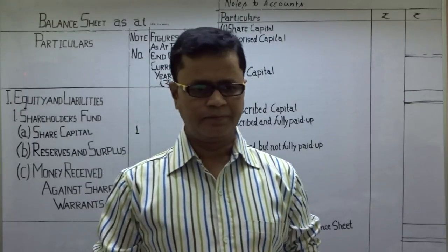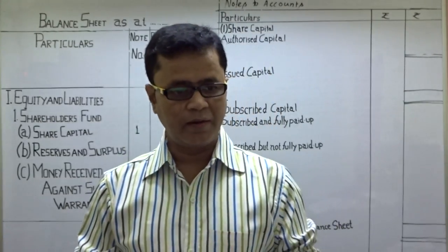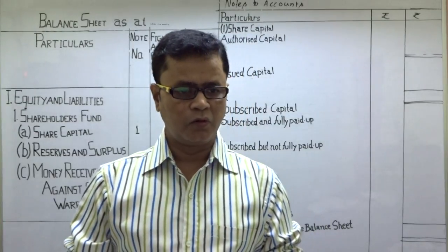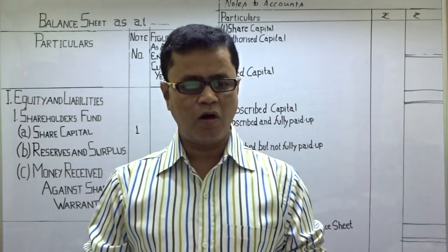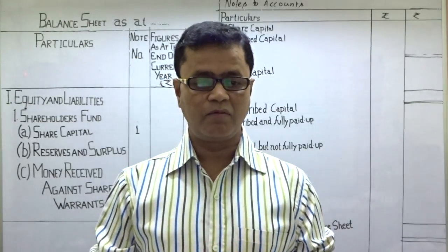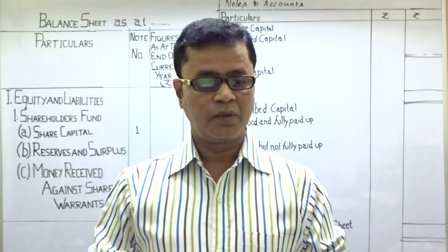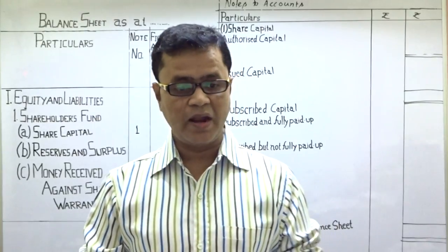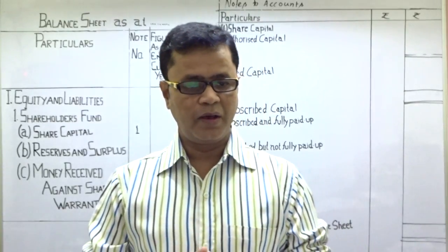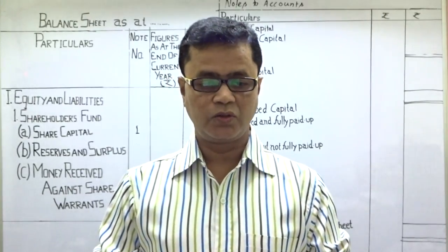Question number two: New Bill Limited was registered with an authorized capital of ₹5,00,000 divided into 50,000 equity shares of ₹10 each. The company decided to offer to the public 30,000 equity shares of ₹10 each at a premium of 20% per share. Applications for 28,000 shares were received and allotted to all applicants. All calls were made and duly received except the final call of ₹2 per share on 200 shares. Prepare the share capital in the balance sheet of New Bill Limited as per the Companies Act 2013, and also prepare notes to accounts.